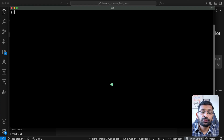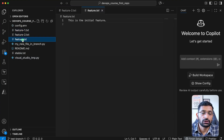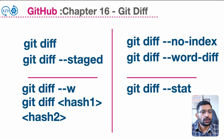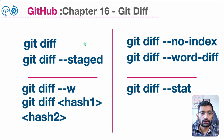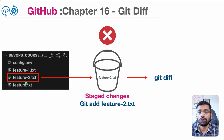Here is my terminal where we will be running the git diff command. On the back side you can see my Visual Studio Code where I have opened my GitHub repository, which contains feature1, feature2, and a feature text file that we will be using to perform this demo and understand the git diff command.